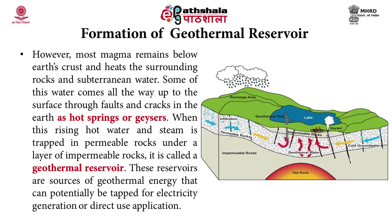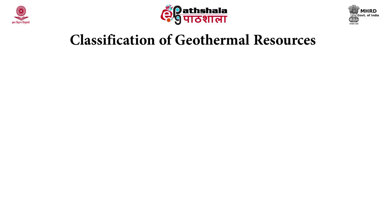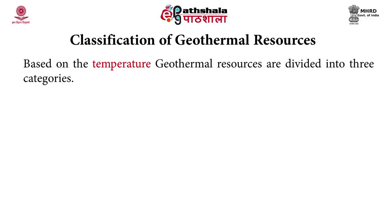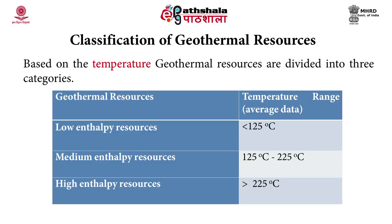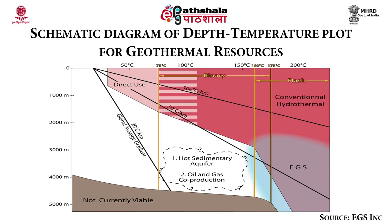These reservoirs are sources of geothermal energy that can potentially be tapped for electricity generation or direct use applications. Based on temperature — normally known by enthalpy — geothermal resources are divided into three categories: low enthalpy resources, medium enthalpy resources, and high enthalpy resources. Low enthalpy resources have a temperature below 125 degrees centigrade. Medium enthalpy has a temperature of 125 to 225 degrees Celsius. In this schematic diagram, you can see the depth-temperature plot for geothermal resources.